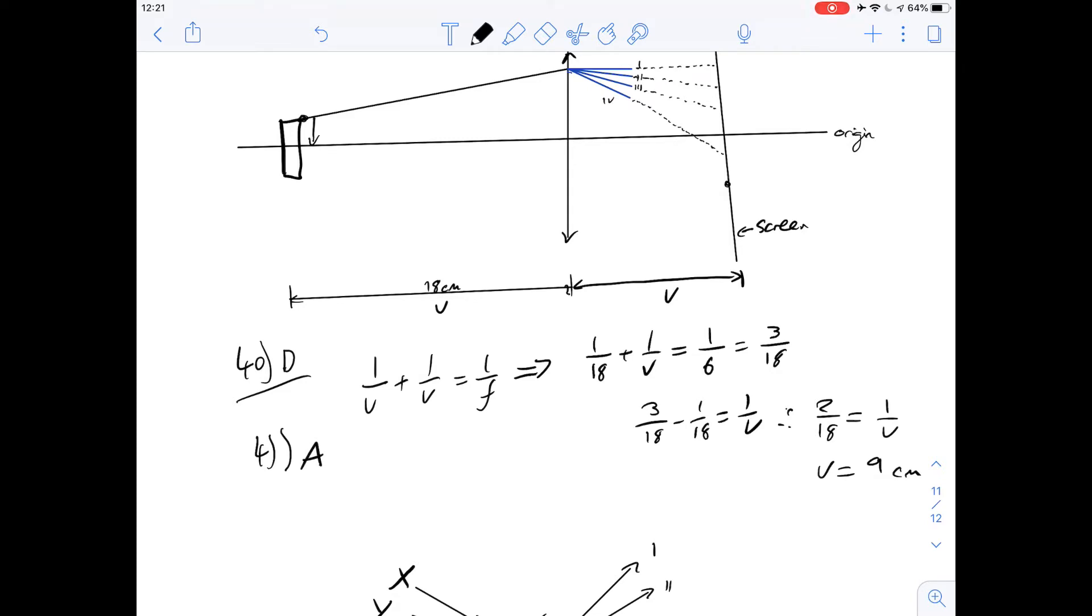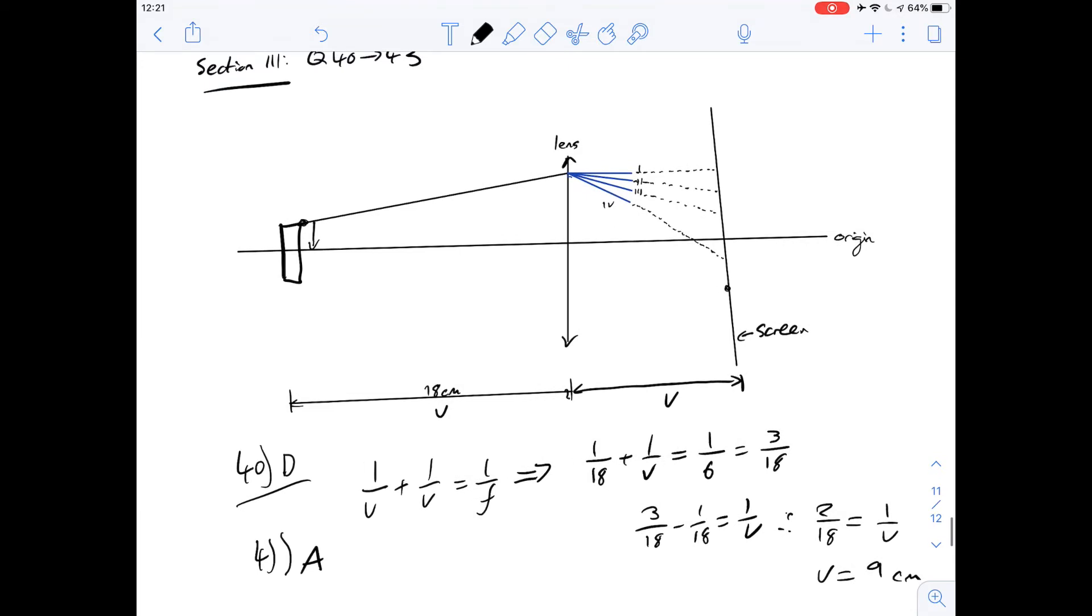Okay so 42 we're asked about the orientation and size of the image formed on the screen relative to the coin. So we know with a converging lens the answer is going to be that we get an inverted image or in this case an opposite image. That's what they've said here and orientation wise it's going to be opposite. So we know the answer for 42 couldn't be A and it couldn't be B.